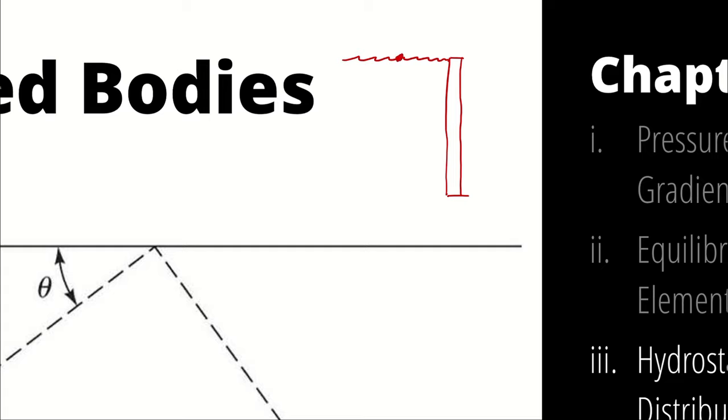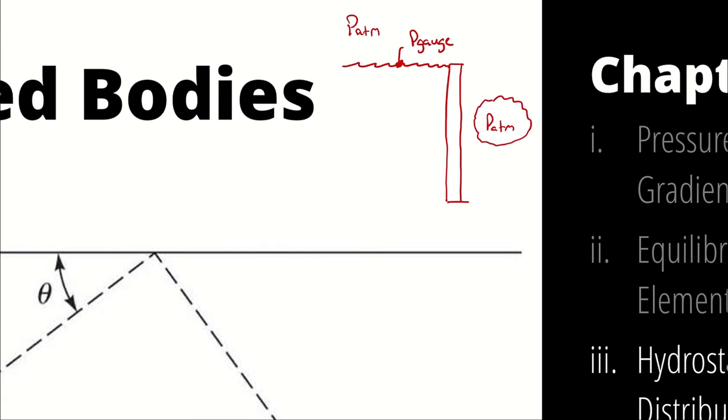We could say the gauge pressure at the top of the fluid is zero. Why am I talking about gauge pressure? Because atmospheric pressure, in this hypothetical, is acting on both sides of the gate. It's the pressure difference that we are concerned about. So the gauge pressure at the top would be zero and would linearly increase with height.